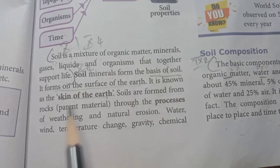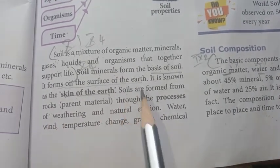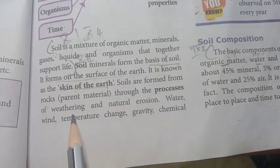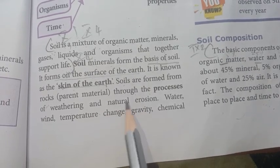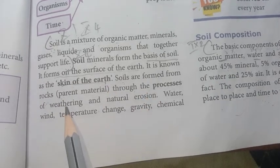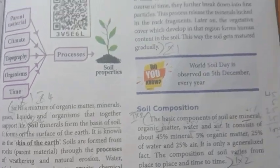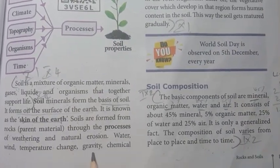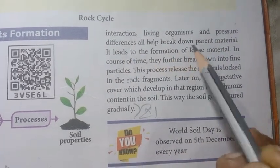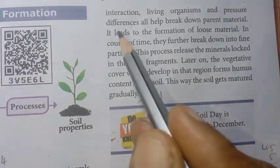Soils are formed from rocks — the parent material — through the process of weathering and natural erosion. Water, wind, temperature change, gravity, chemical interaction, living organisms and pressure differences all help break down parent material.